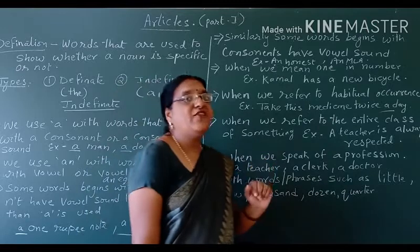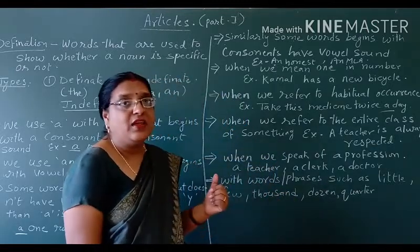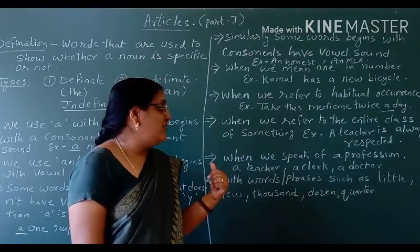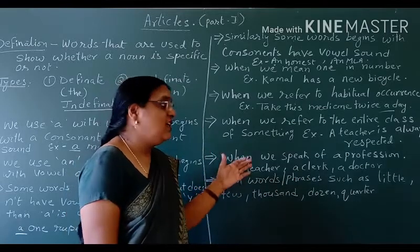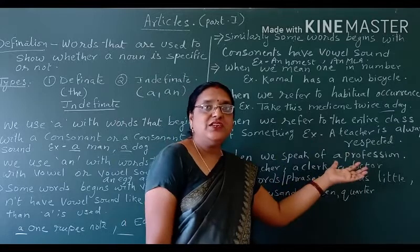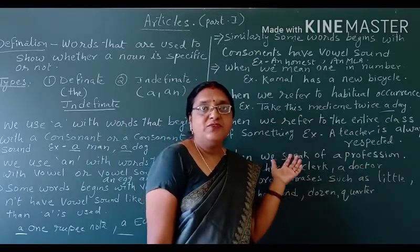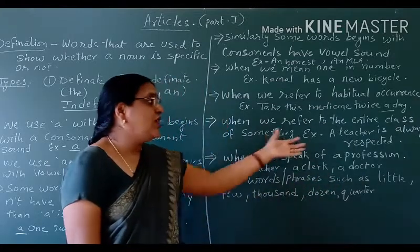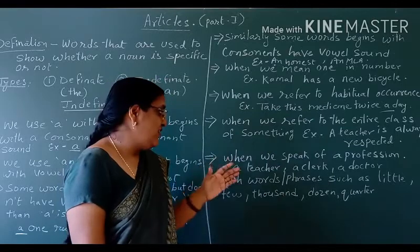Next: when we speak of a profession — profession means the work that we are doing. For instance: a teacher, a clerk, a doctor, an engineer, a businessman, a craftsman — anything that can be a profession. When we are talking about a profession, we have to use the indefinite article.